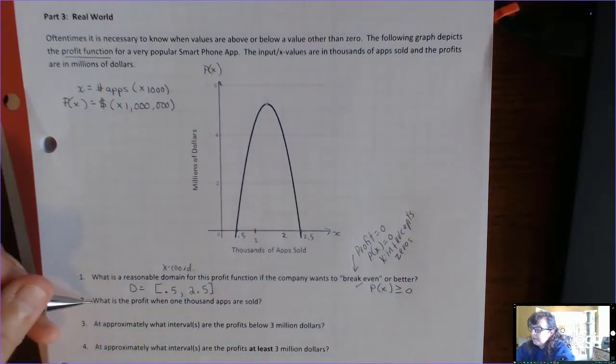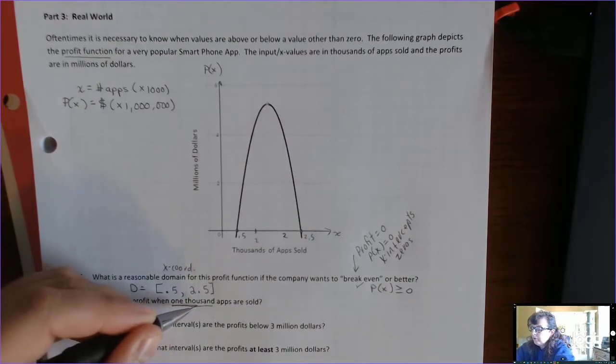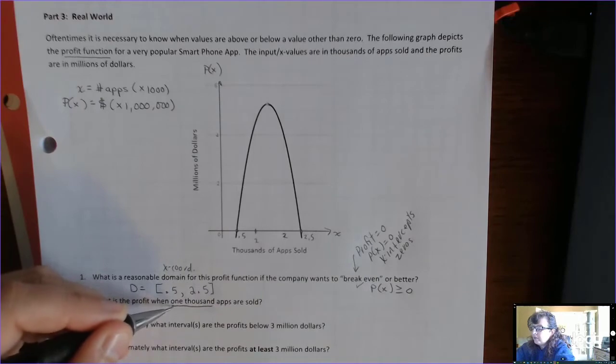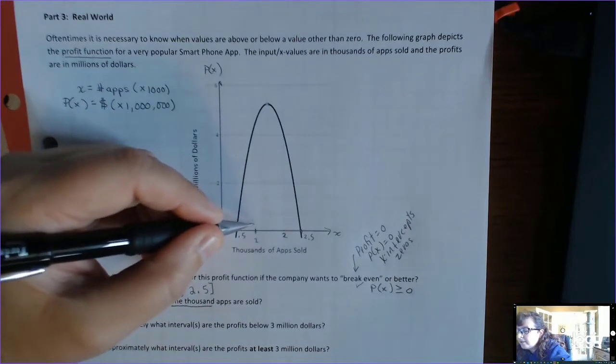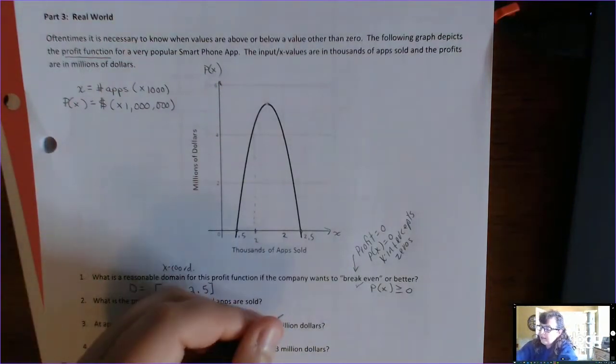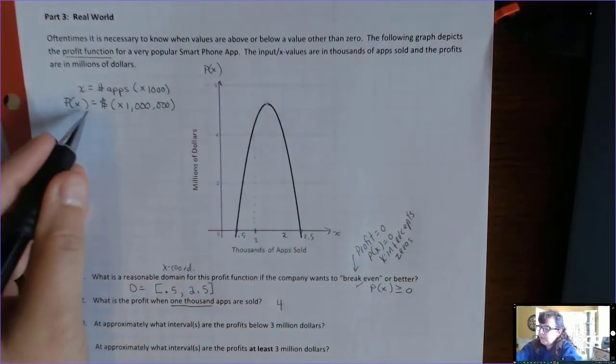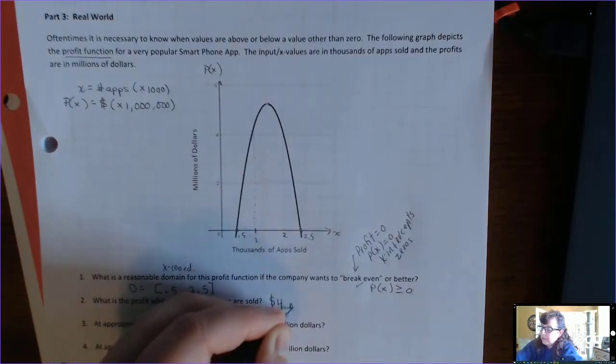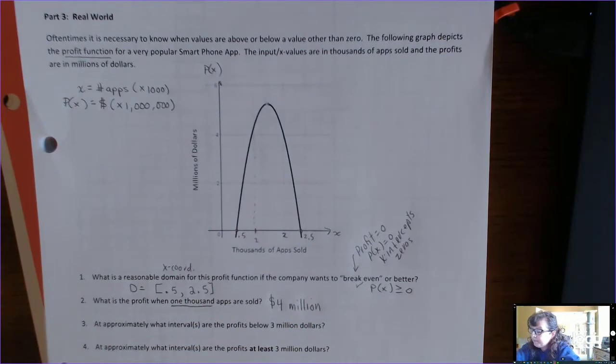Okay, next question, what is the profit when 1,000 apps are sold? See, we're outside, we're in the real world, so we're looking at the numbers, we're saying the word 1,000, but inside the function, that's just the number 1 and I'm saying it's about right there. So, it looks like the answer is 4. Now, you wouldn't want to put 4. All the word problems, you always want to have your units. So, you look up here, okay, profit is dollars and millions. So, the correct answer is to write out 4 million dollars. That's the profit.